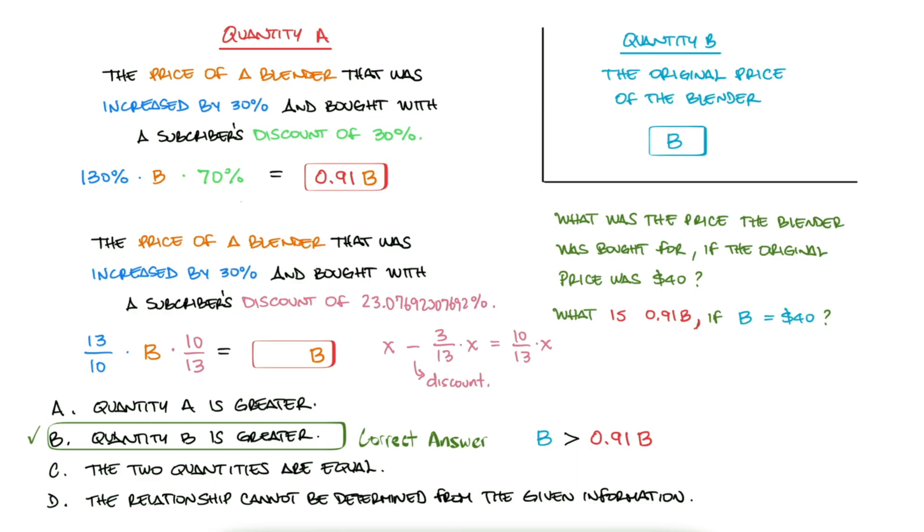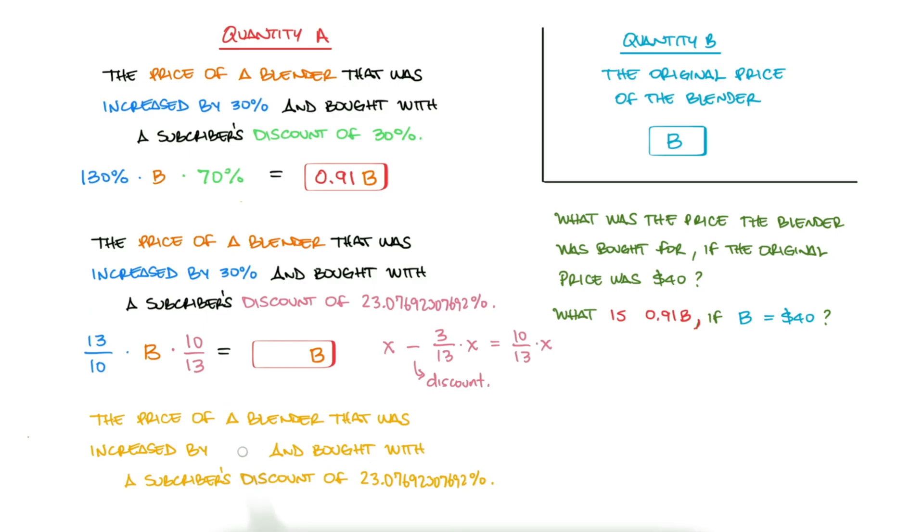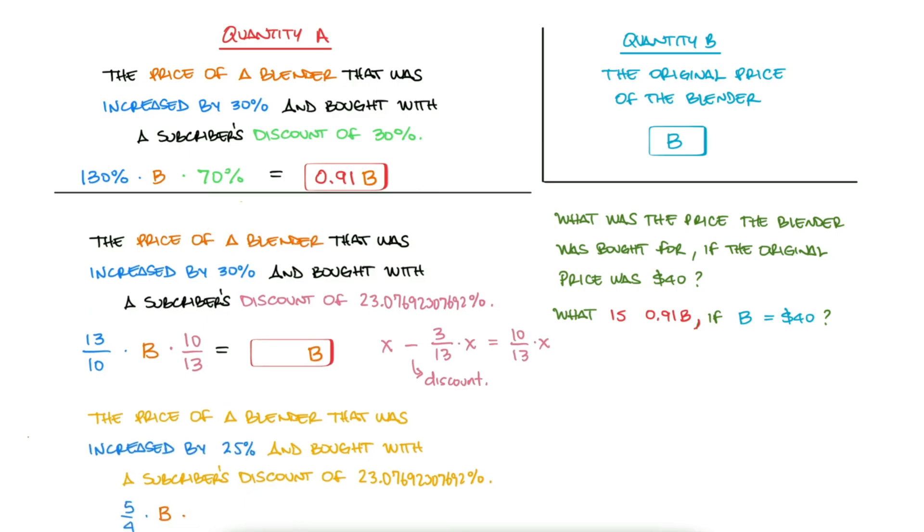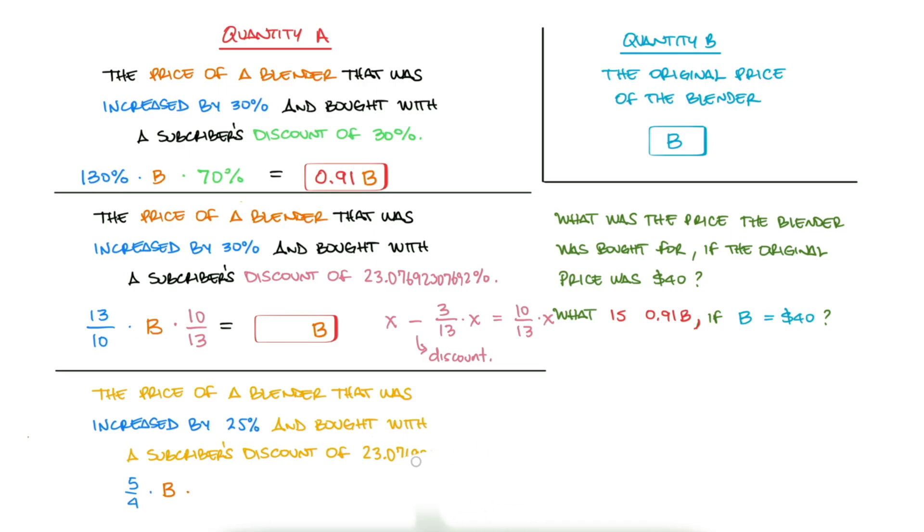However, a common example where the numbers do work out well could be a 25% increase so that we're keeping 125% or 5 fourths of the original value, and then a 20% decrease so that we are keeping 80% or 4 over 5 of the original value. That way, we're multiplying 5 over 4 times 4 over 5 to be equal to 1, or 100%.